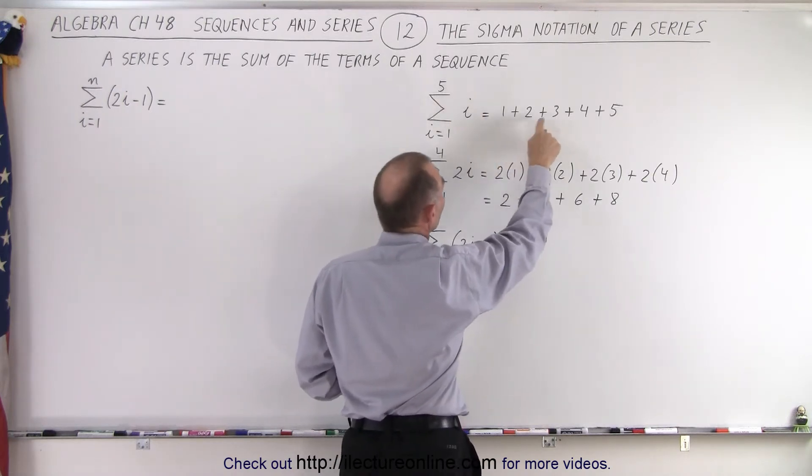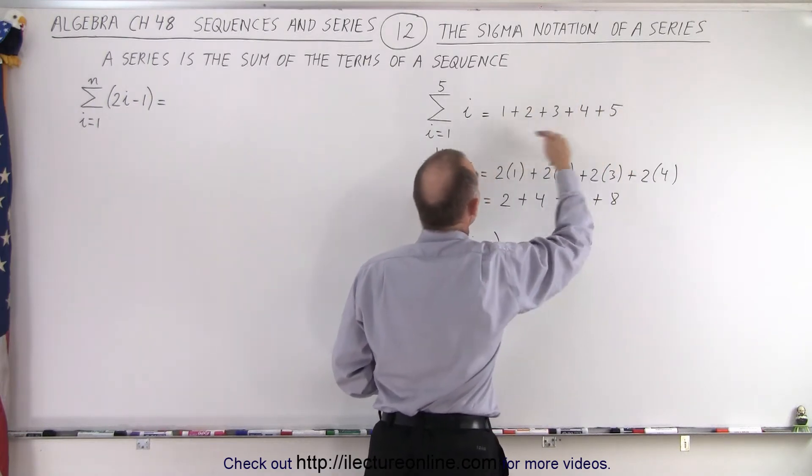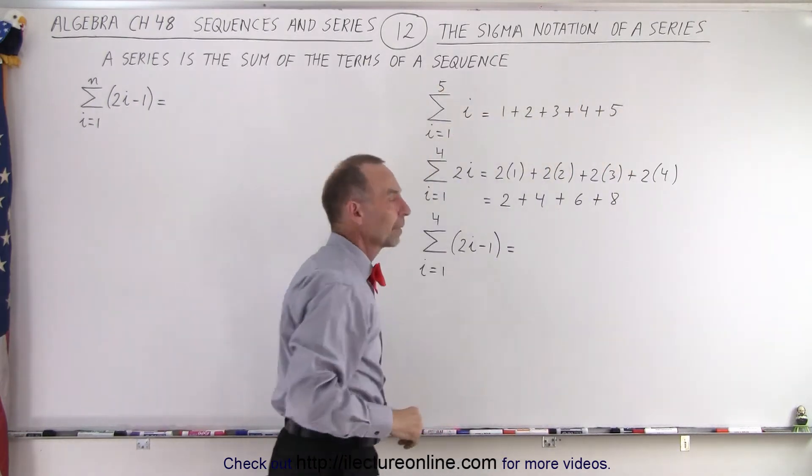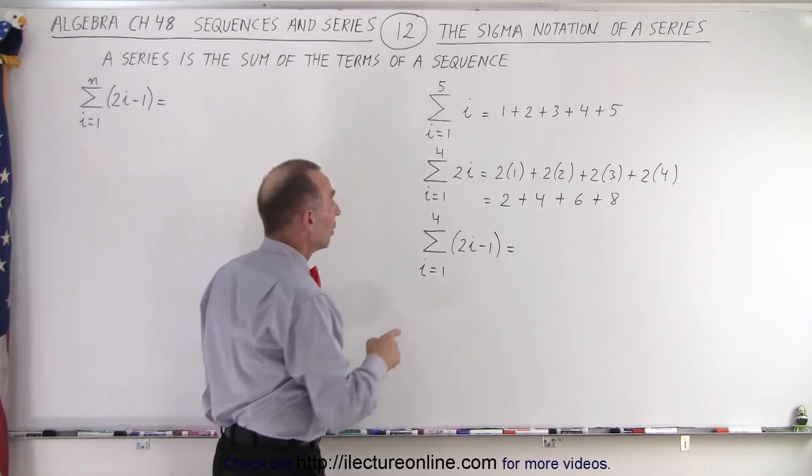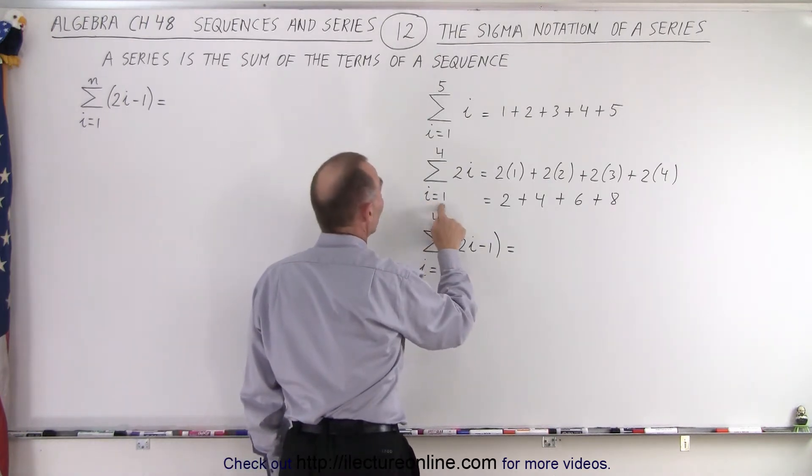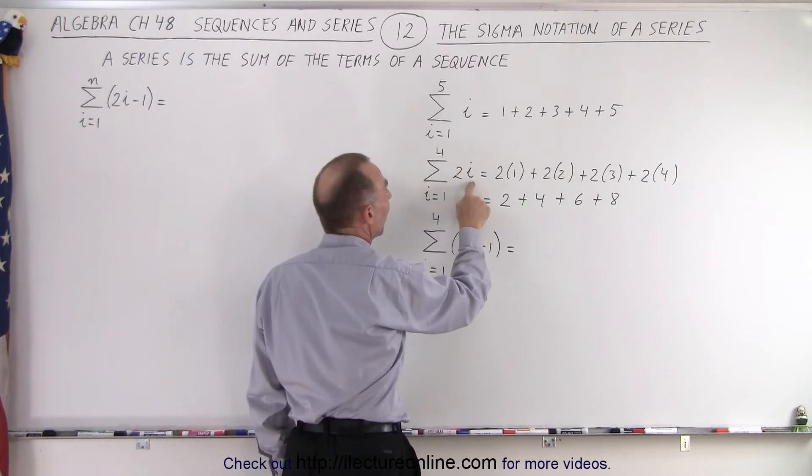That means 1 plus 2 plus 3 plus 4 plus 5. So this can be written in a compact form like this. What if we write it like this? The sum from i going from 1 to 4, so the upper limit here is 4, of 2i.